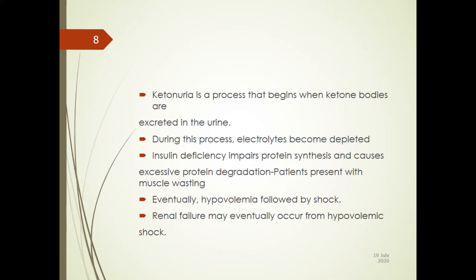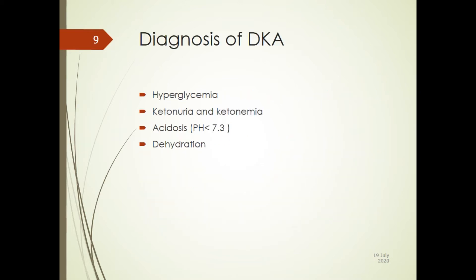To diagnose diabetic ketoacidosis, there are four things to look for: hyperglycemia, ketonuria and ketonemia (if you can measure ketones in plasma), acidosis, and dehydration, since these patients present in a very dehydrated state.